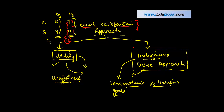An indifference curve shows the combinations which give equal satisfaction to the consumer. For any point lying on this curve, representing different quantities of goods A and B, the satisfaction of the consumer is the same. We'll discuss all these in detail with specific examples of various commodities that can achieve the same results.